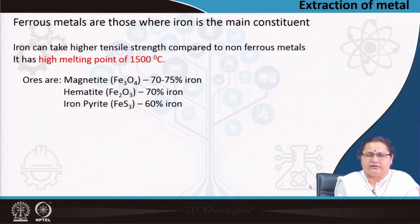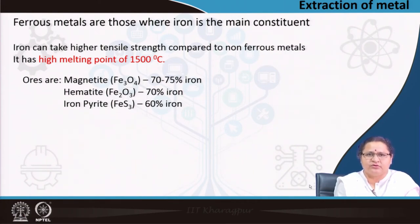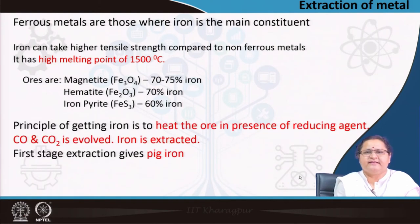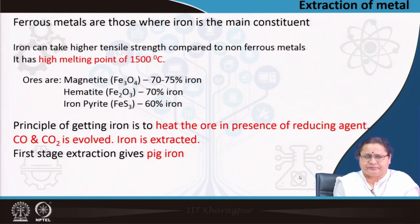Coming to the melting of its ore, we need to know what the ores are. Magnetite, hematite, and iron pyrites are majorly the three ores found extensively in many parts of India. We get around 60 to 75 percent iron content from them. The principle of getting iron is heating the ore in the presence of a reducing agent — you reduce the ore, carbon dioxide and carbon monoxide are evolved, and iron is extracted in a crude form.